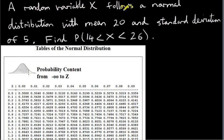A random variable X follows a normal distribution with mean 20 and standard deviation of 5. Find the probability that X lies between 14 and 26.